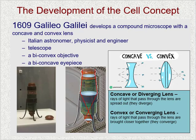It was the first compound microscope with a concave and convex lens. It had a biconvex objective piece and a biconcave eyepiece.